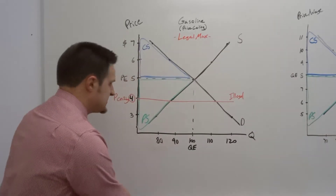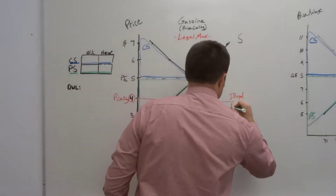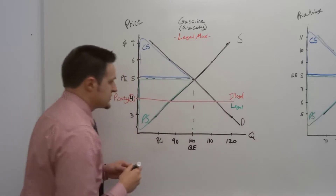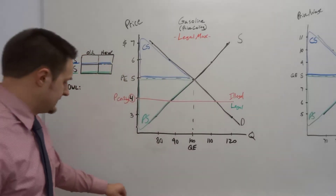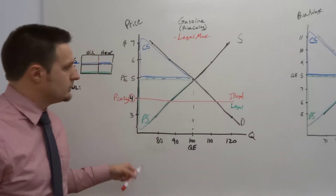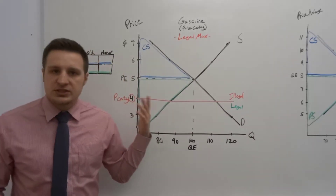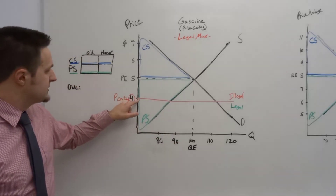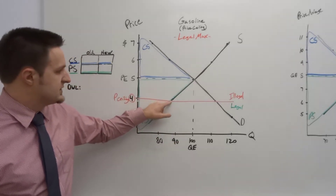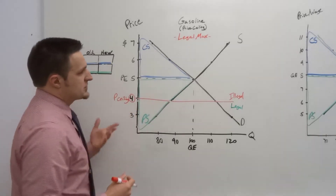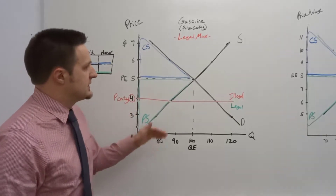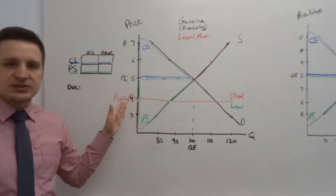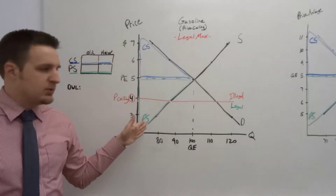It's still legal to charge below $4, so that's all legal. But anything above $4, we are now making it illegal to sell. Where does $4 intersect with the quantity supplied? The law of supply says that at high prices, suppliers will supply more, and at low prices, suppliers will supply less.